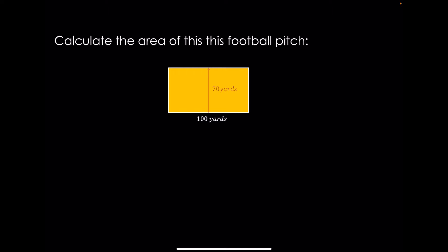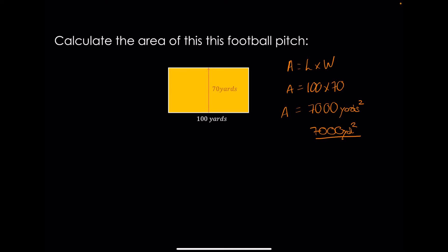Pause the video and calculate the area of this football pitch. It's a rectangle, so area equals length times width. The area equals 100 times 70, which gives 7,000 yards squared. You must include the units — yards squared, or yd² — and that little two shows it's an area.